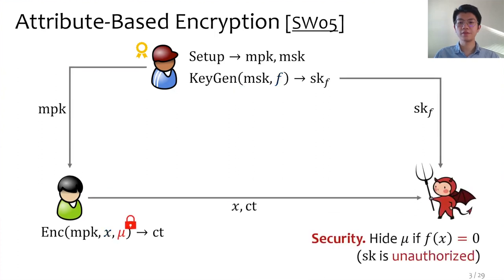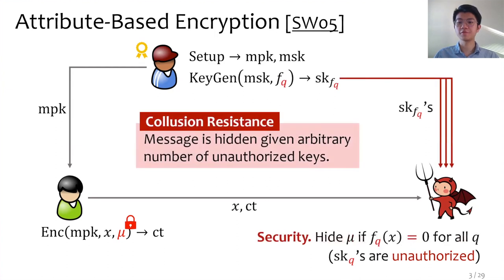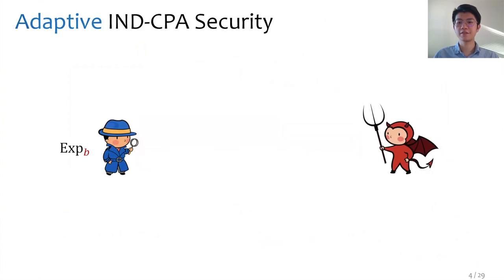Security of ABE says if a key is unauthorized, meaning that f equals zero, then the message mu should be hidden. The scheme should be collusion-resistant: the message should remain hidden even if an adversary gets arbitrarily many keys, as long as each of them is unauthorized. Formally, we consider IND-CPA security, captured by experiments between a challenger and an adversary. To begin, the challenger sends the master public key to the adversary.